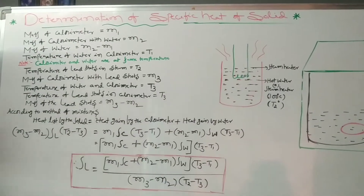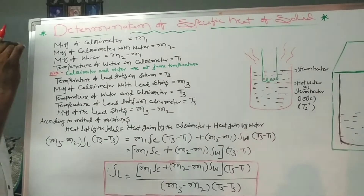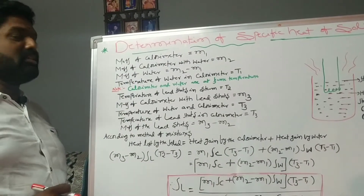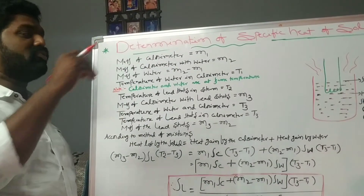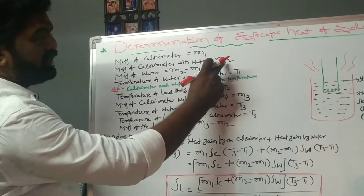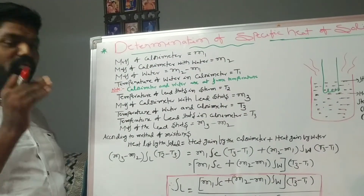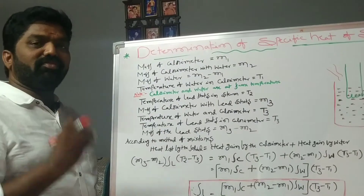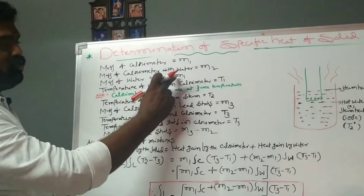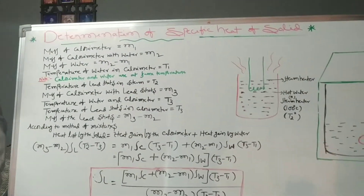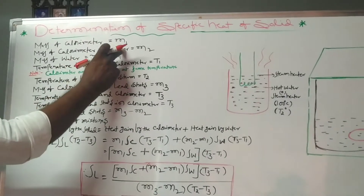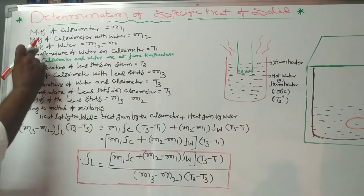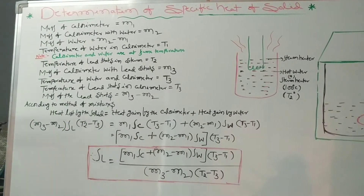Now fill the calorimeter with water to one third of its volume. After that, once again measure the mass of calorimeter with water. Consider that as m2 grams. We can then find the mass of water alone: mass of water equals m2 minus m1.